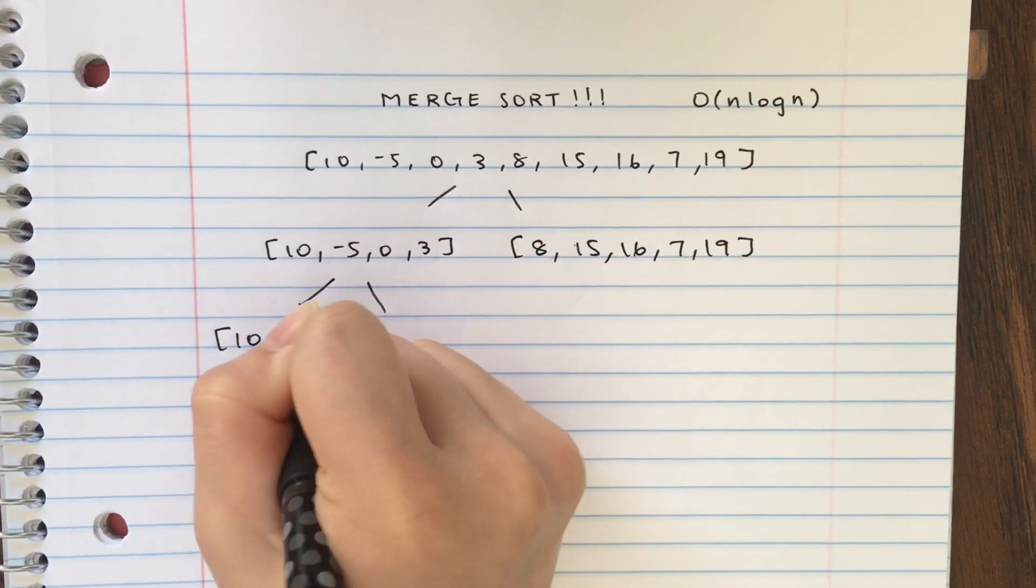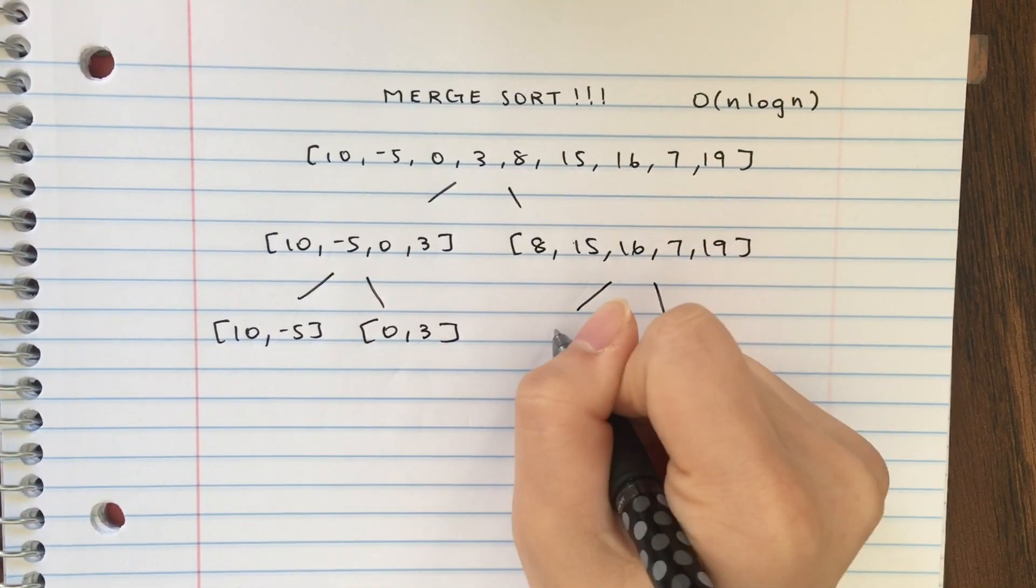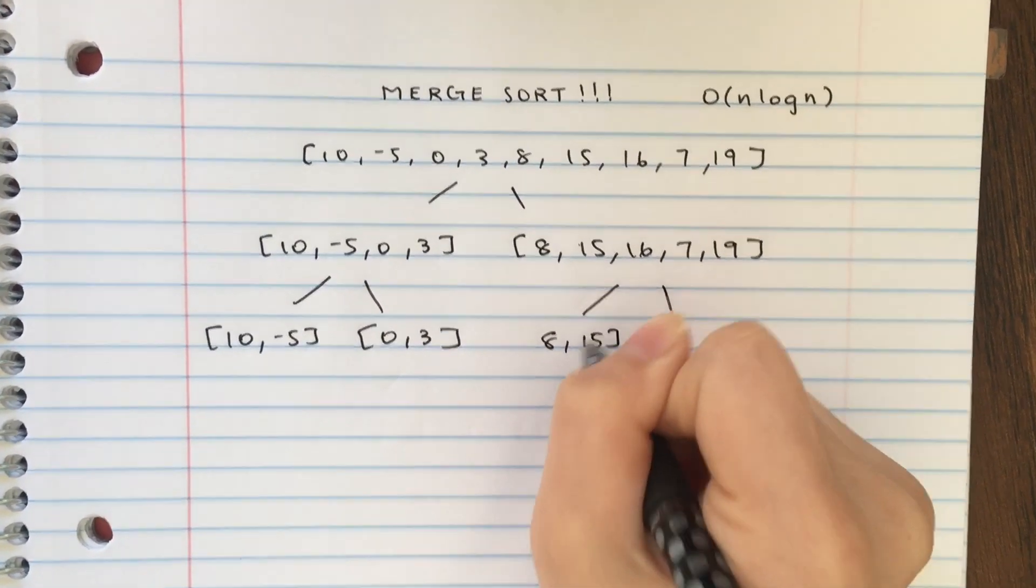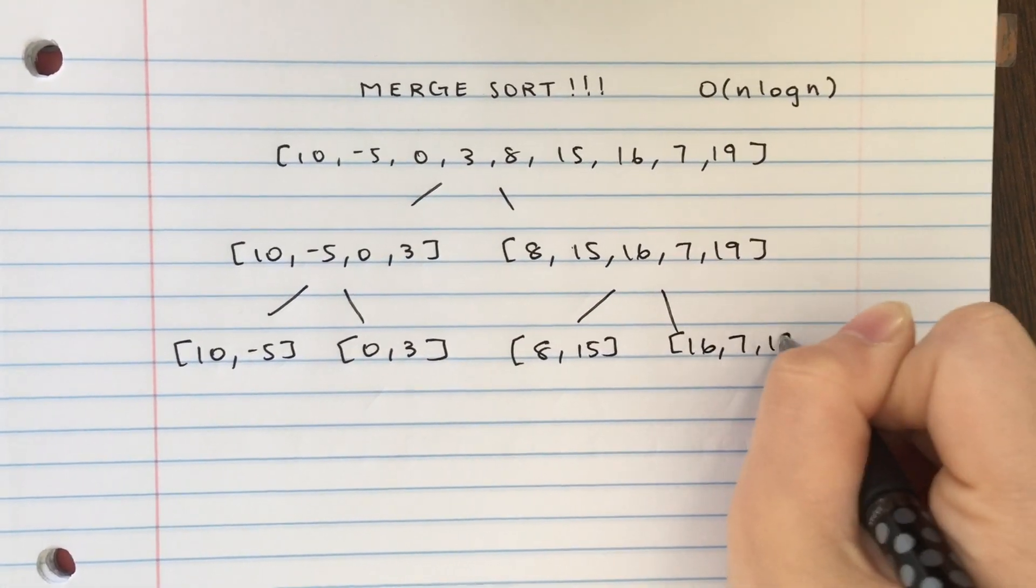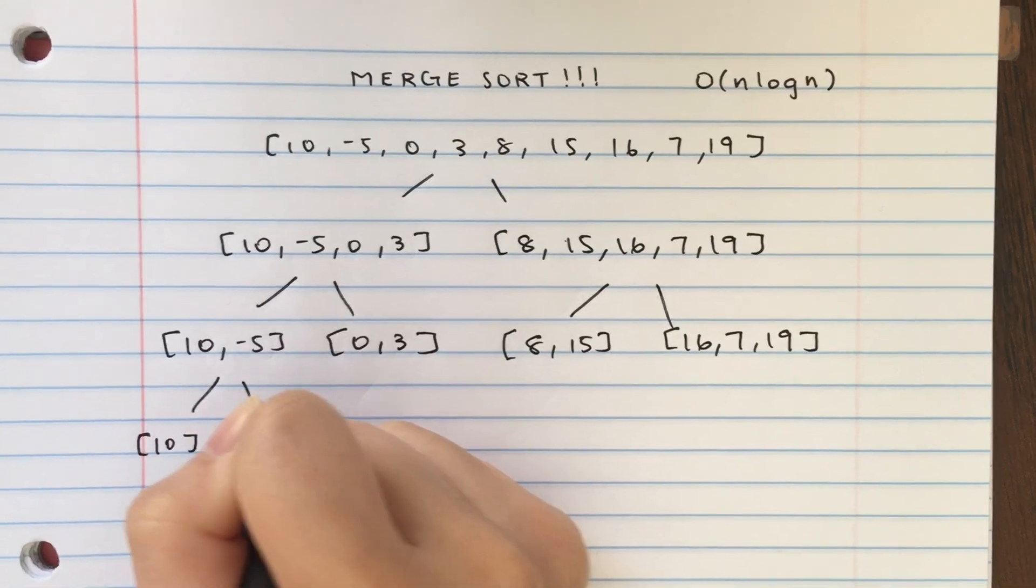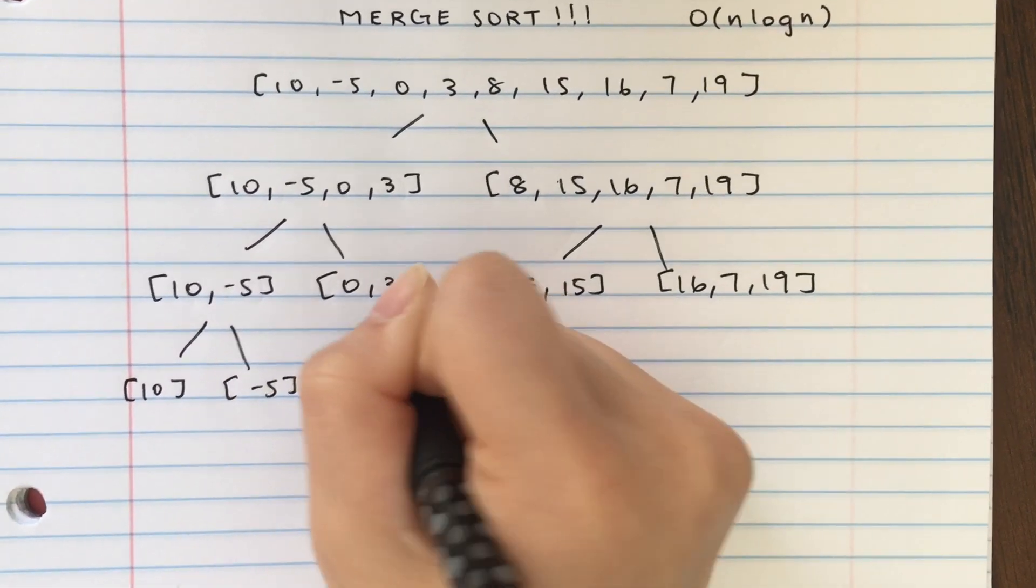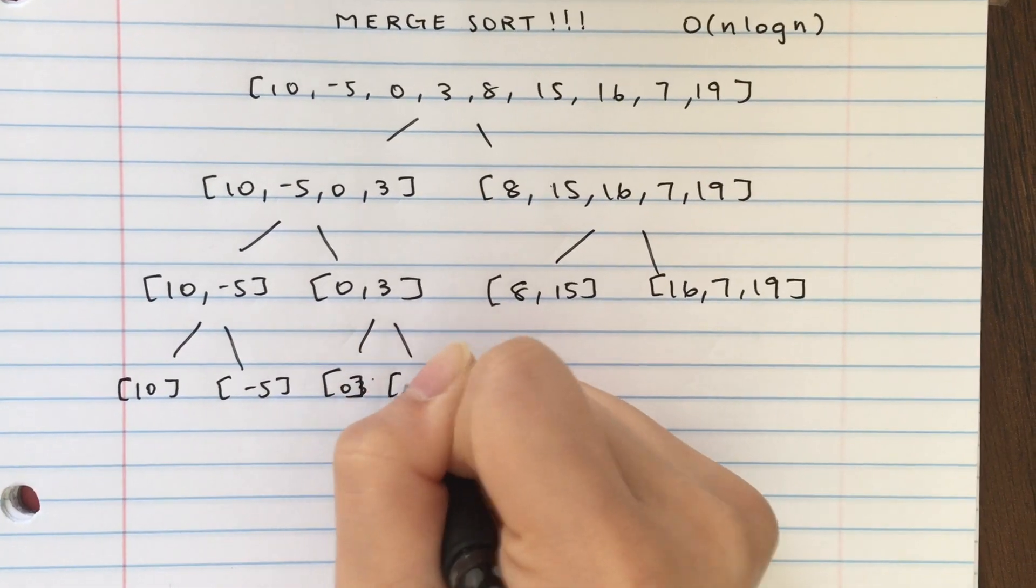So this goes into 10, negative 5, 0, and 3. And like I said, you have to stay consistent, so we're going to put the extra element on the right side here. And this is going down to 10, negative 5, 0, and 3.